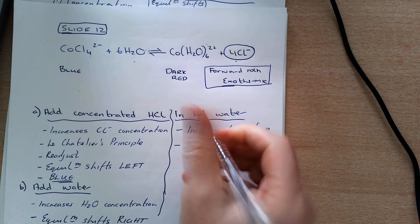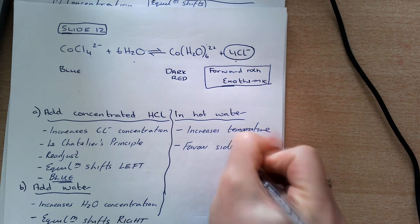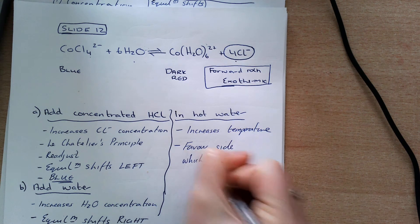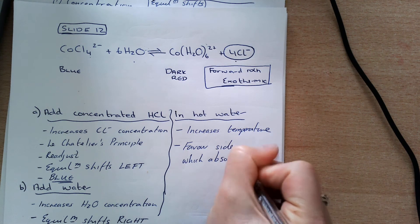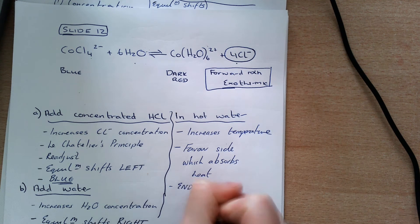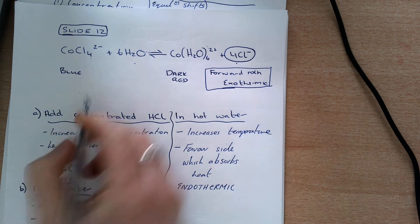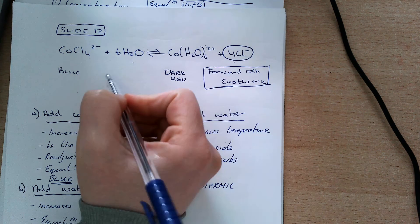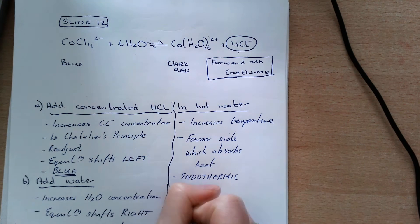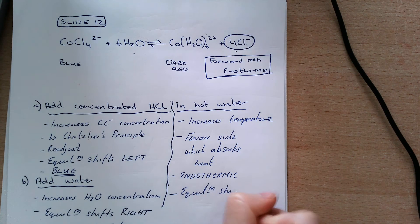Okay, so if I increase the temperature, I want to favor the side which absorbs or takes in heat. An increase in temperature always favors the endothermic side. And in this case, because my forward reaction is exothermic, my backward reaction must be endothermic.